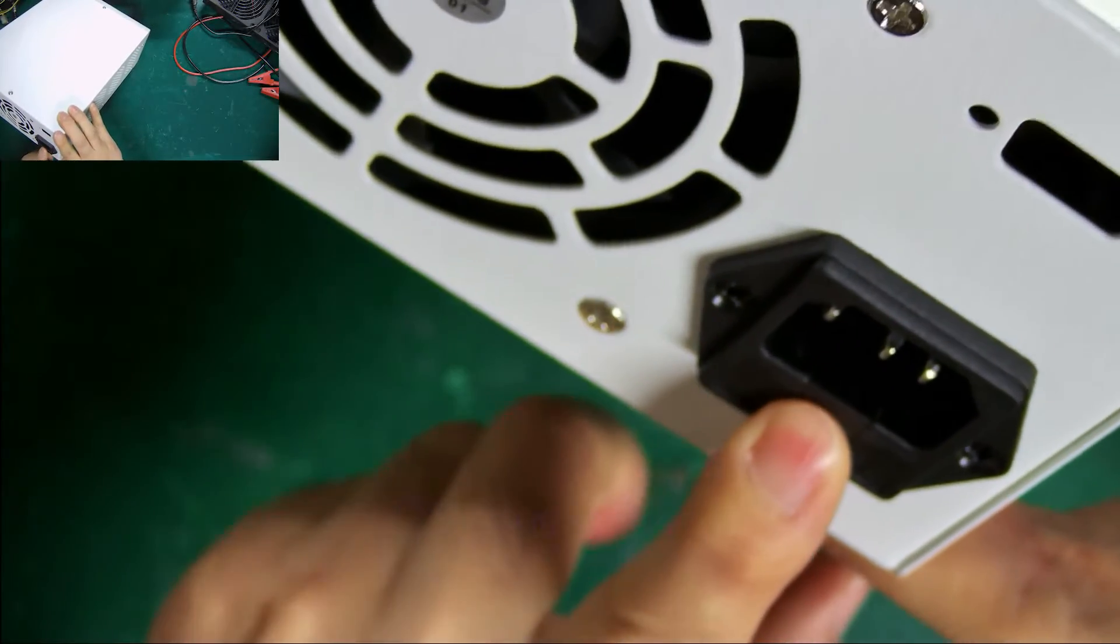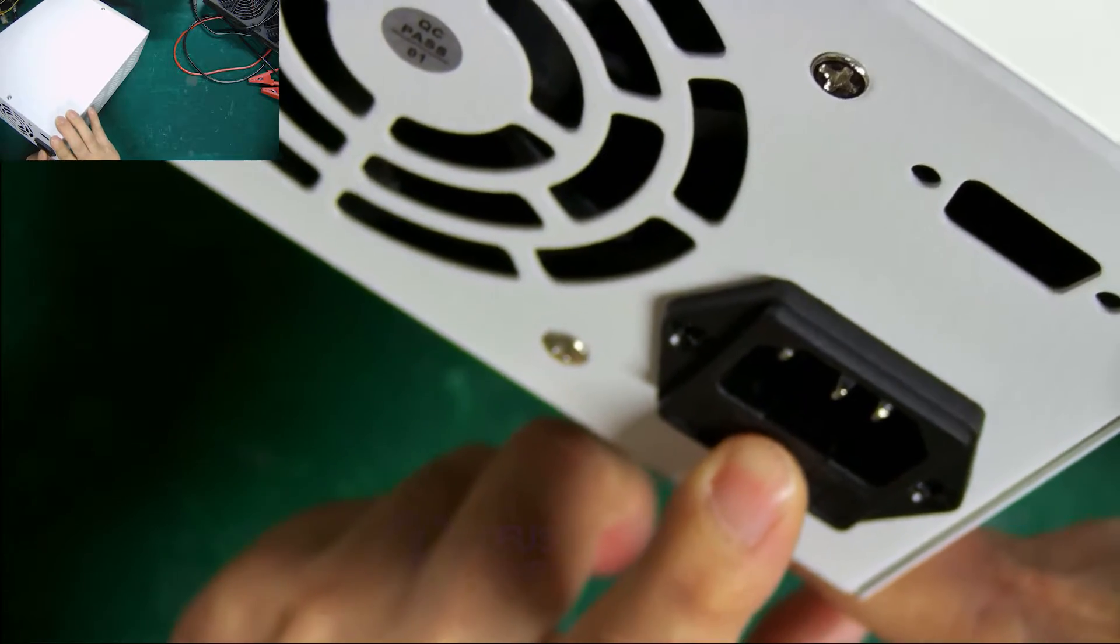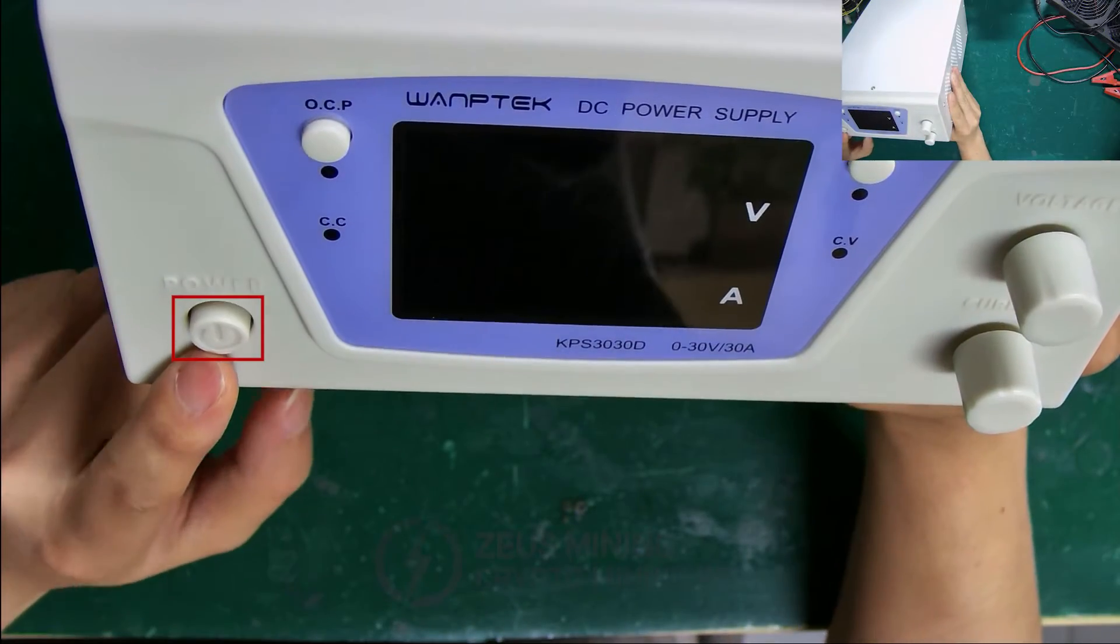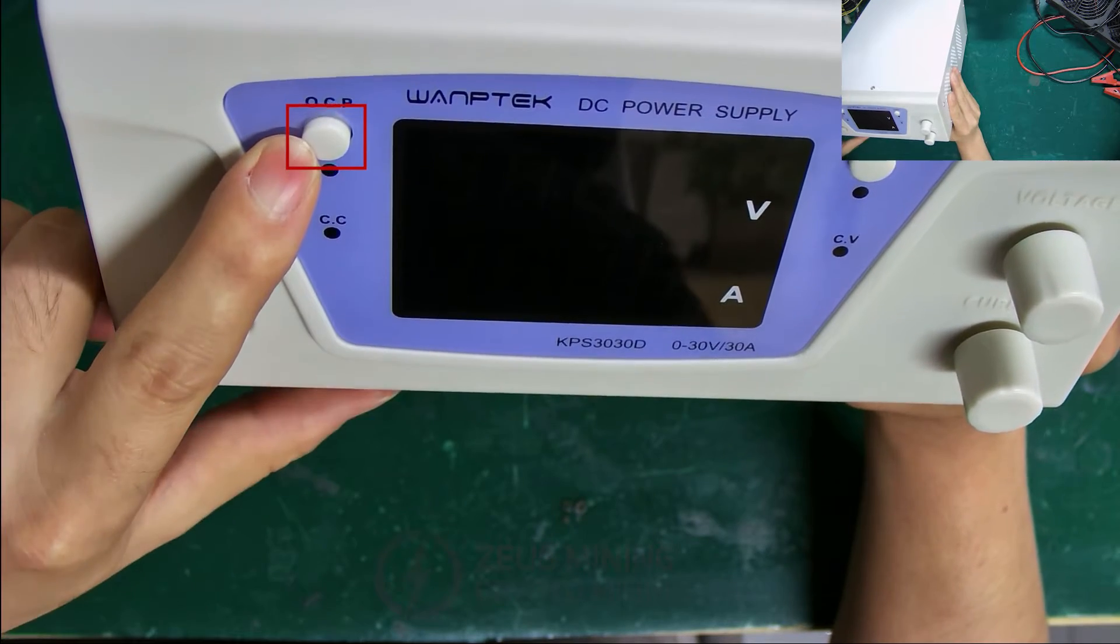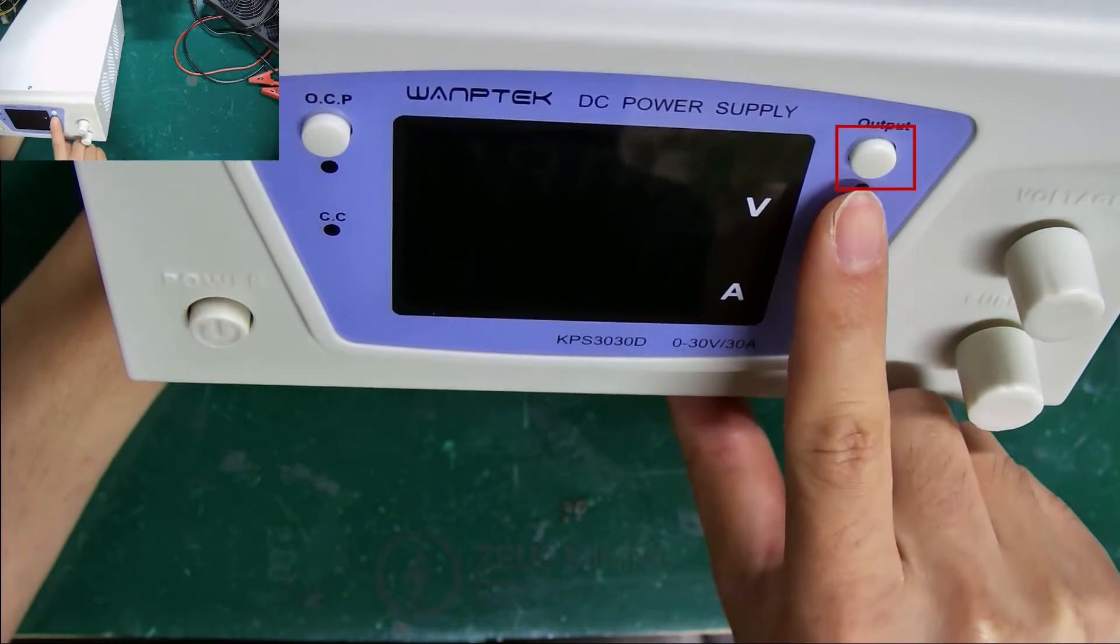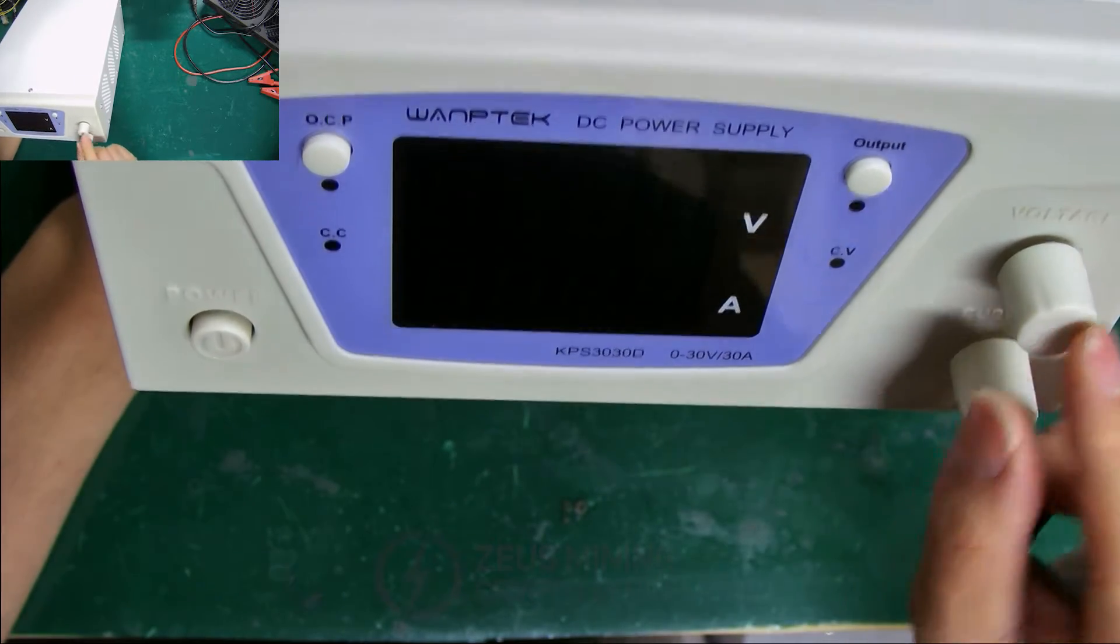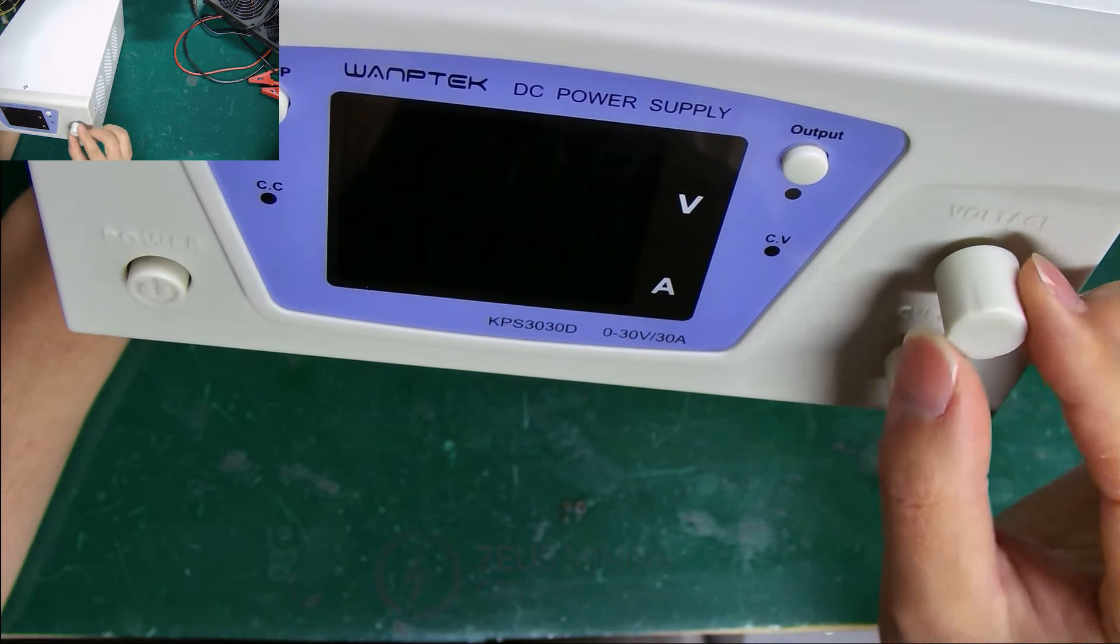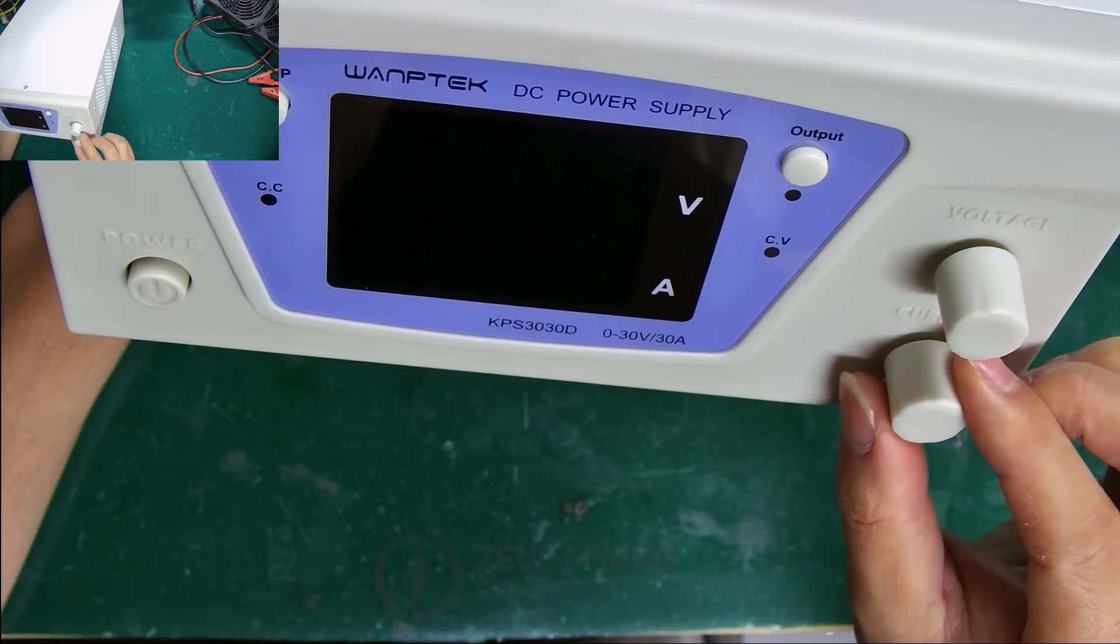Here is the power cord connection interface, which is the AC voltage input port. This is the power on button. This one is the short circuit protection switch, and another is the output switch. On the right side of the power supply are two knobs, one on top for voltage adjustment, and the other for current adjustment.